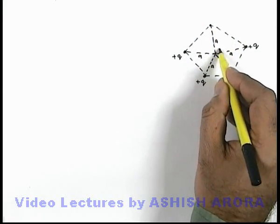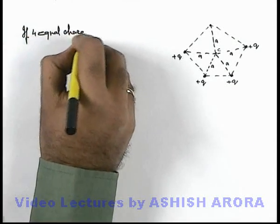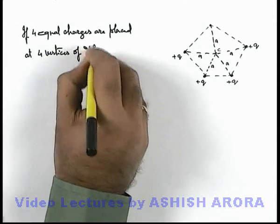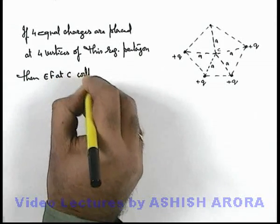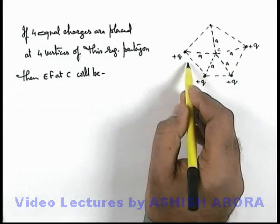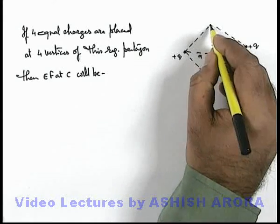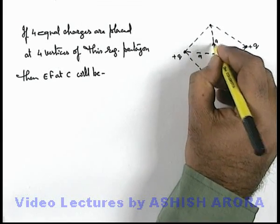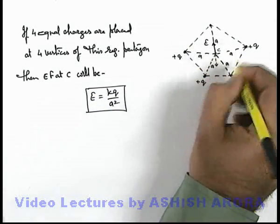Now in this situation, four equal charges are placed at four vertices of a regular pentagon. The electric field at the center due to these four charges must be equal and opposite to that due to the fifth charge, because as soon as the fifth charge is placed, the four charges nullify its electric field. So the electric field due to these four charges will be directed toward the fifth vertex, and this electric field can directly be written as kq/a², directed away from the fifth vertex.